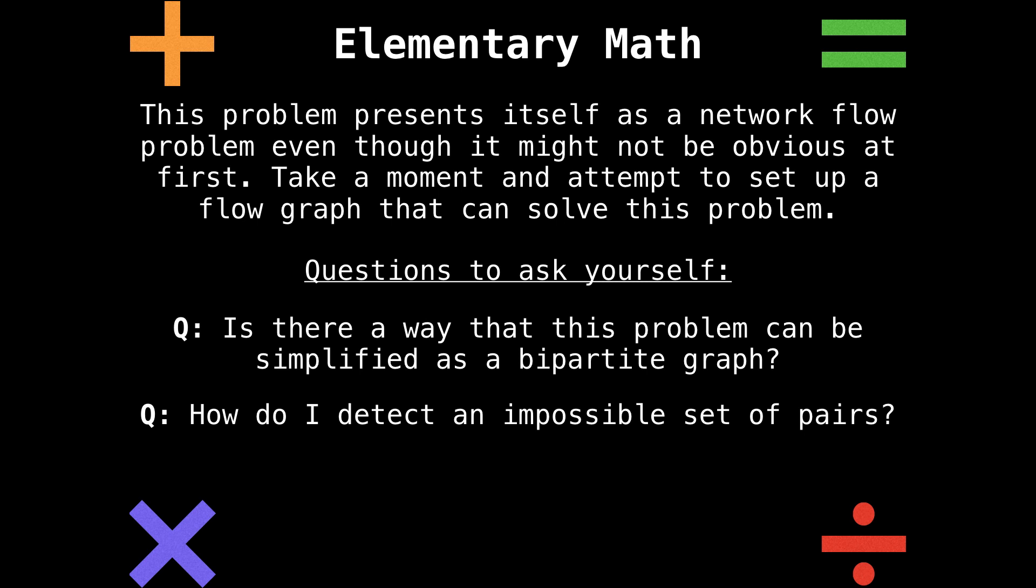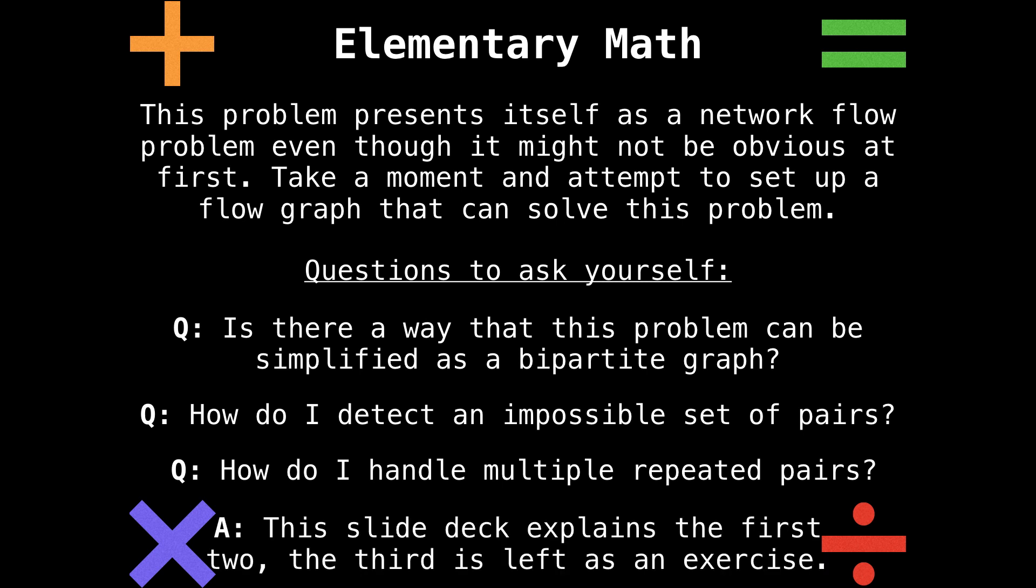And lastly, I'm thinking about edge cases. Like, how do I handle multiple repeated input pairs, and how is it going to change the flow graph? These are all super important questions you need to ask yourself when solving this problem. This slide deck explains the first two, and the third is somewhat left as an exercise. I don't want to give away the full solution to this really awesome problem.